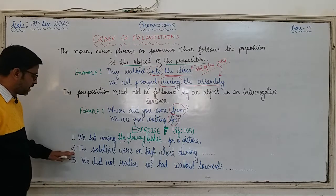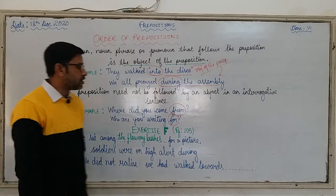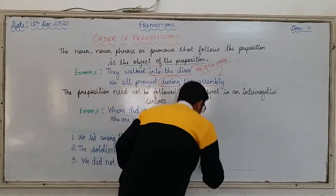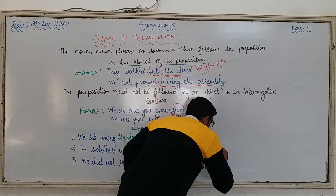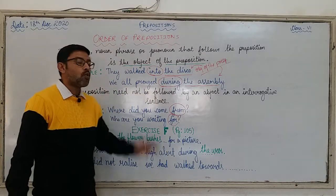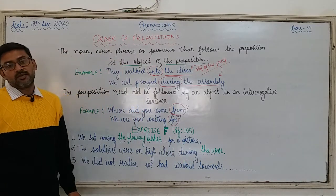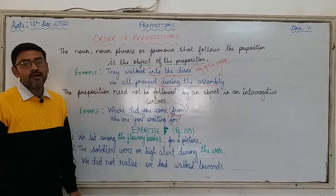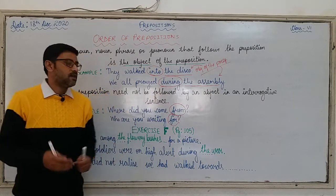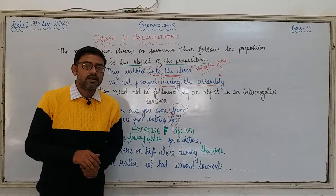Let us come to the next sentence in exercise F page number 105: 'The soldiers were on high alert during ___.' You can write: 'during the war.' Here 'during' is the preposition, followed by its object 'the war.' So this is the object of the preposition. You can also write 'during the curfew,' 'during the difficult days,' or 'during the flood' — you can add on to that.